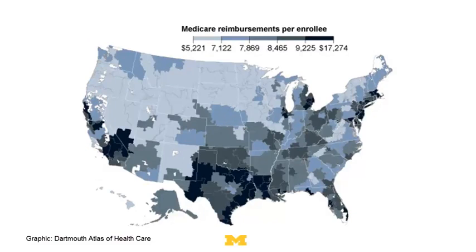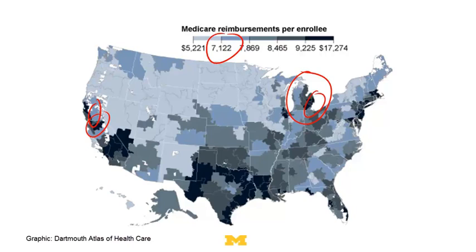Here's one more — this is Medicare reimbursements per enrollee. I'm from Michigan, and if you look at Michigan you see some areas where they get a whole bunch back and others where they get very little. In California there are massive disparities — regions where it's less than $7,000 right next to regions where it's more than $17,000. Again, you could ask: is this because of sorting, where people who like to give a lot of government money move to one area, or is it because of some peer effect, where people give more money because other people give more money?